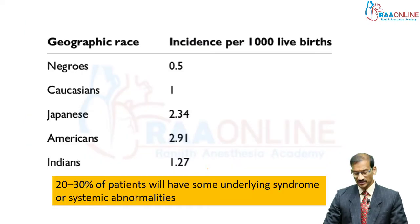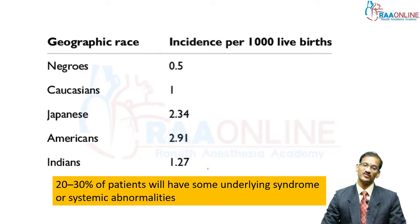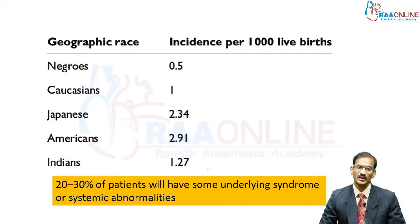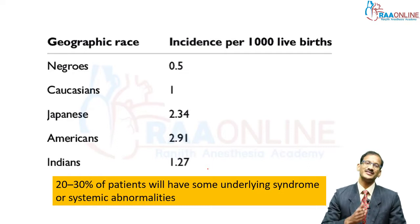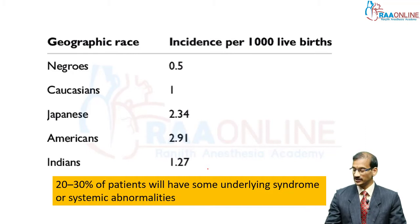The incidence varies across different races. In Indians it's approximately 1.27 per thousand live births, with the highest being in Native Americans. They could occur as an isolated defect or as part of a syndrome — 20 to 30 percent could have an associated syndrome or systemic abnormalities, which has to be looked into.